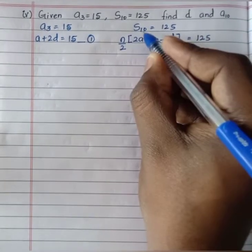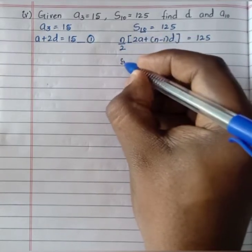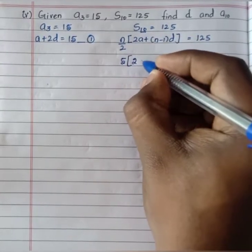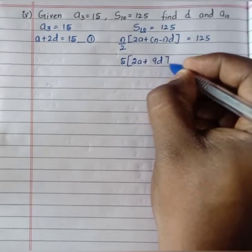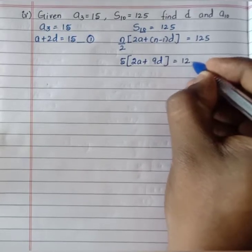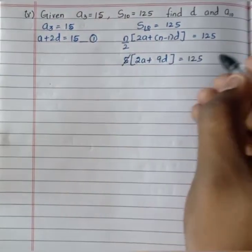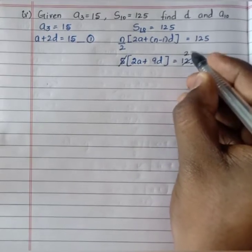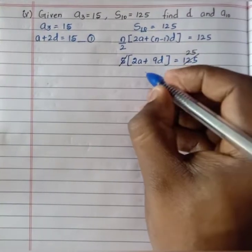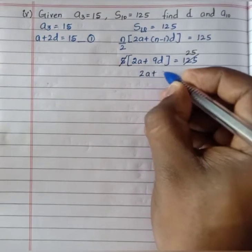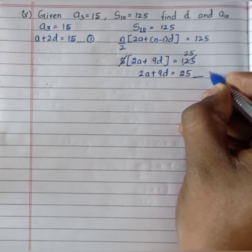Substituting n equals 10: 5 times 2a plus 9d equals 125. Dividing both sides by 5, we get 2a plus 9d equals 25. Taking this as equation 2.